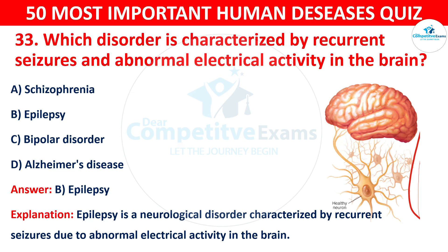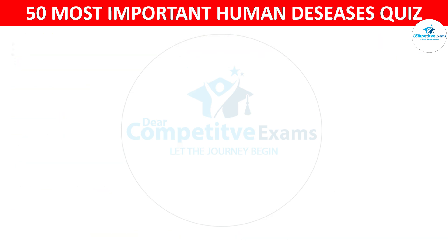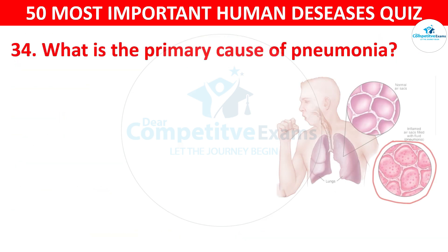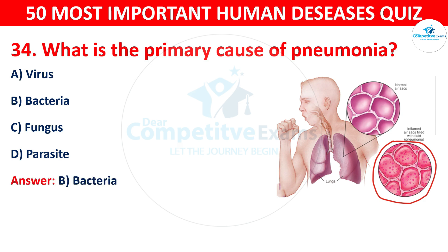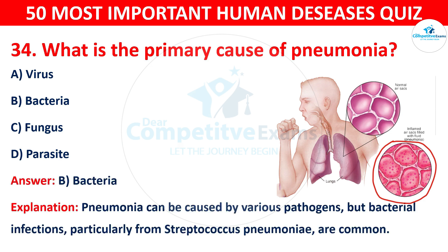Question 34: What is the primary cause of pneumonia? The options are: A) Virus, B) Bacteria, C) Fungus, or D) Parasite. The correct answer is B — bacteria. Pneumonia can be caused by various pathogens, but bacterial infections, particularly from Streptococcus pneumoniae, are very common.